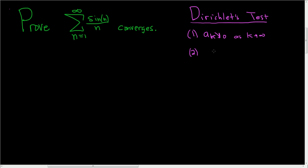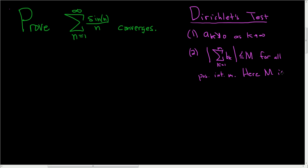And condition two: if you take this finite sum, let's use k again, of say b_k up to little m, this is actually bounded. That means it's less than or equal to some constant M for all positive integers m. And here it's really important that M is constant — big M does not depend on little m.